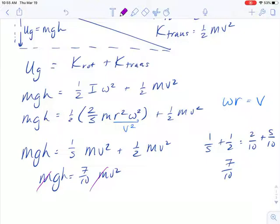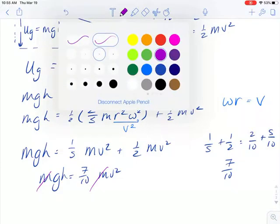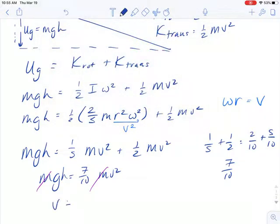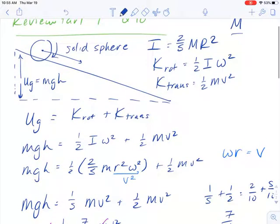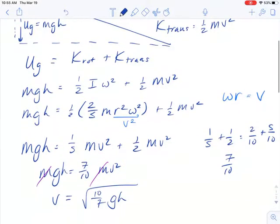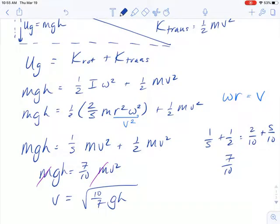And we could solve for the speed. So we'd have V equals the square root of ten-sevenths times GH. Now this V is the translational V. If we wanted to know the rotational V, we would take the translational V, the linear speed, and divide by the radius. That would give us the rotating speed.